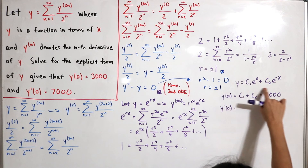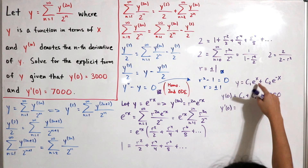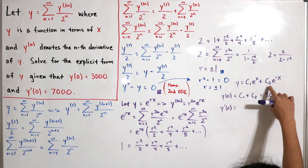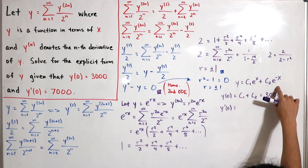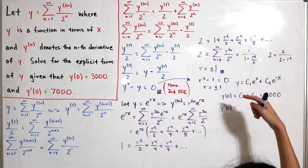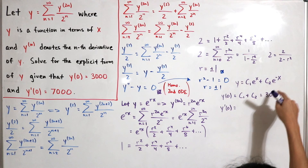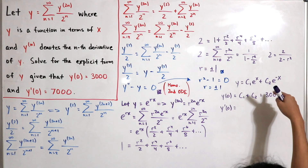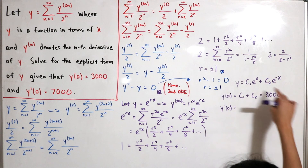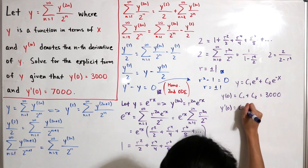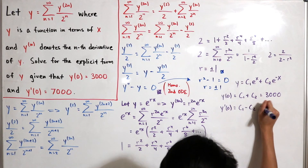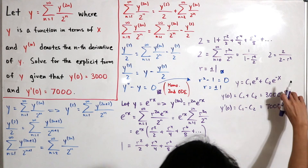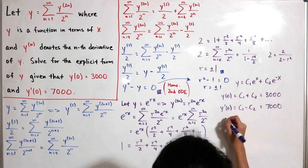For the second condition y'(0) = 7000, we differentiate the general solution to get y' = C1*e^x - C2*e^(-x). Plugging in x=0 gives C1 - C2 = 7000.